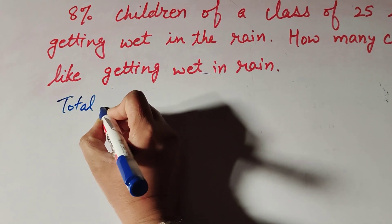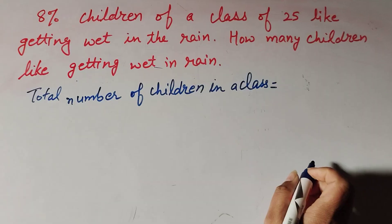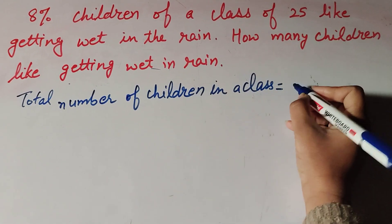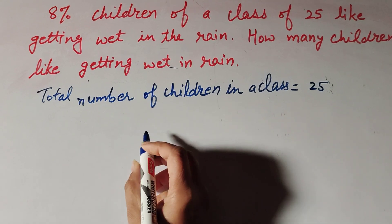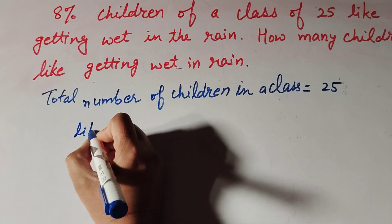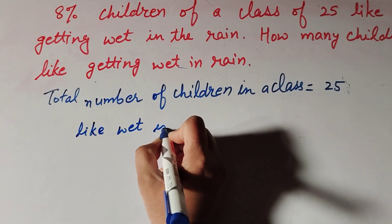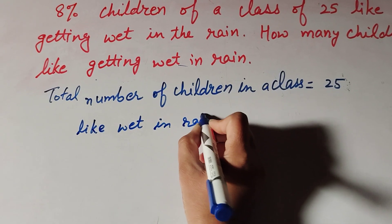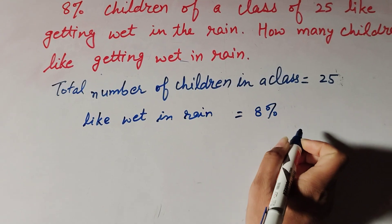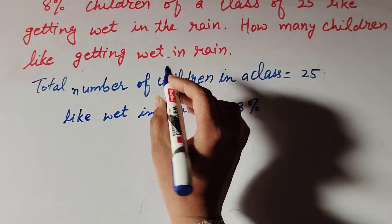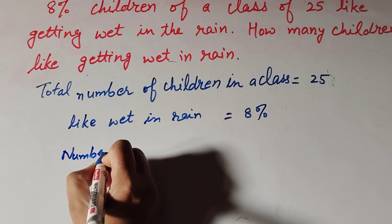Given: the total number of children in the class is equal to 25. Children who like to get wet in rain is 8 percent. Now we find the number of children who like to get wet in rain.